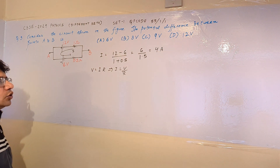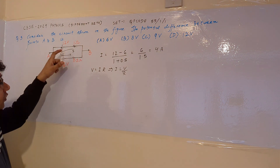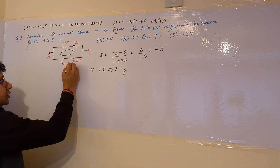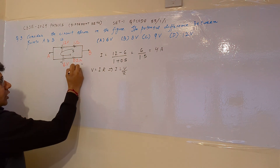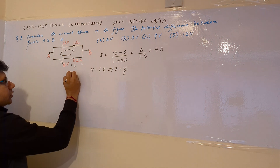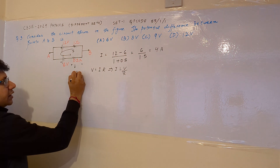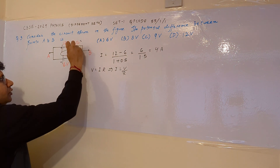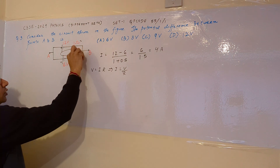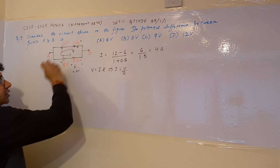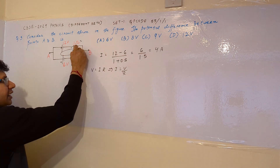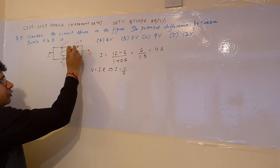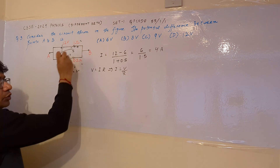A current of 4 amperes flows in this loop in an anti-clockwise manner. When this current passes through the 0.5 ohm resistor, the voltage generated is V equals IR: 4 into 0.5 equals 2 volts. For the 1 ohm resistor, the current entering is 4 amperes. When current enters a passive element like a resistor, the end at which it enters is treated as the positive end.